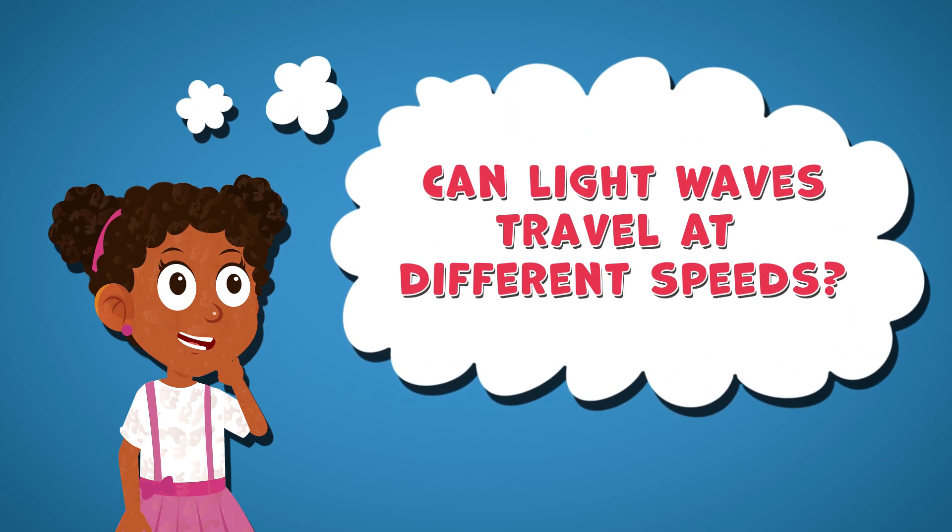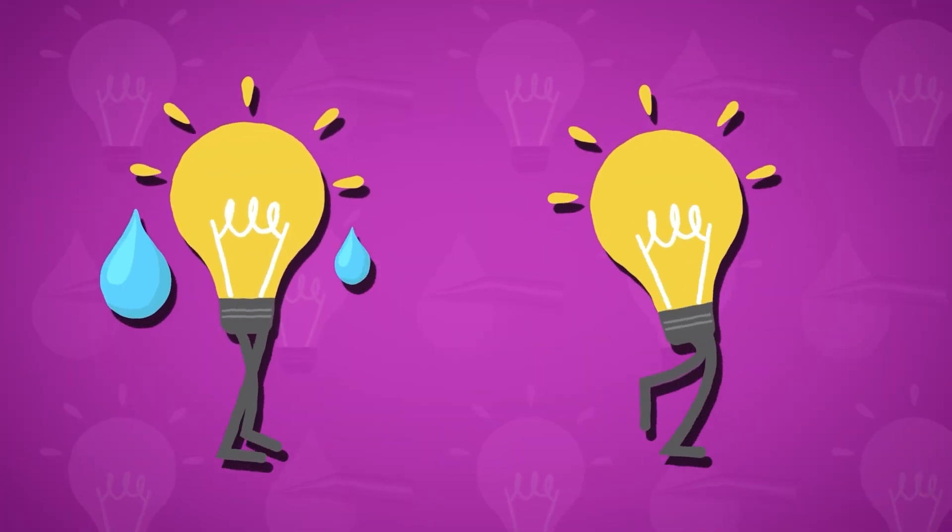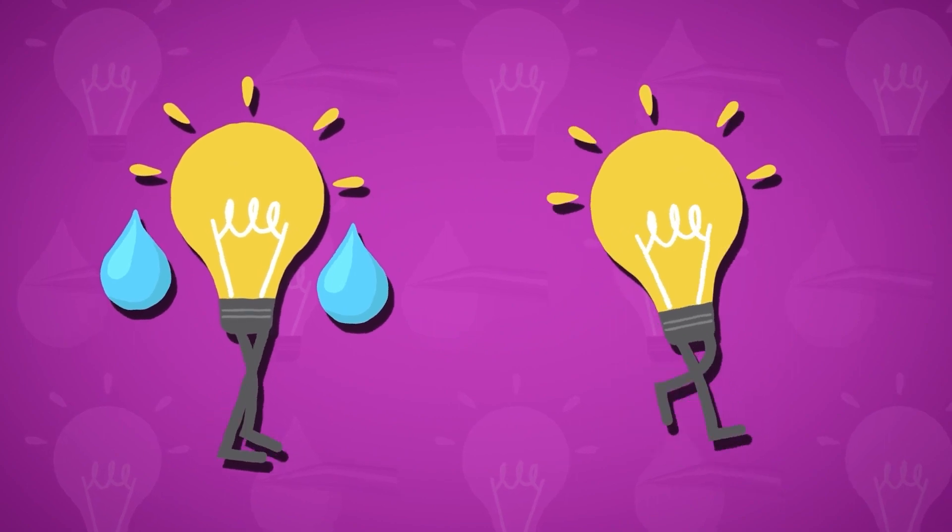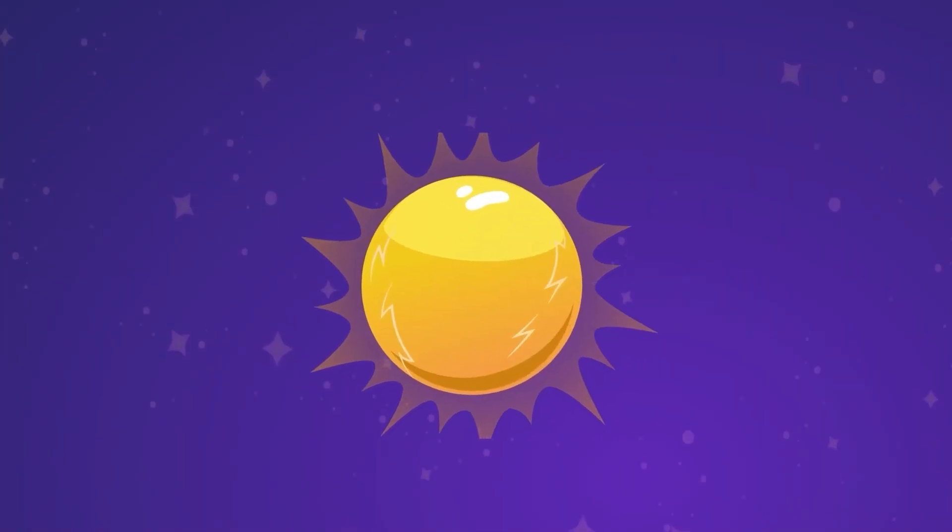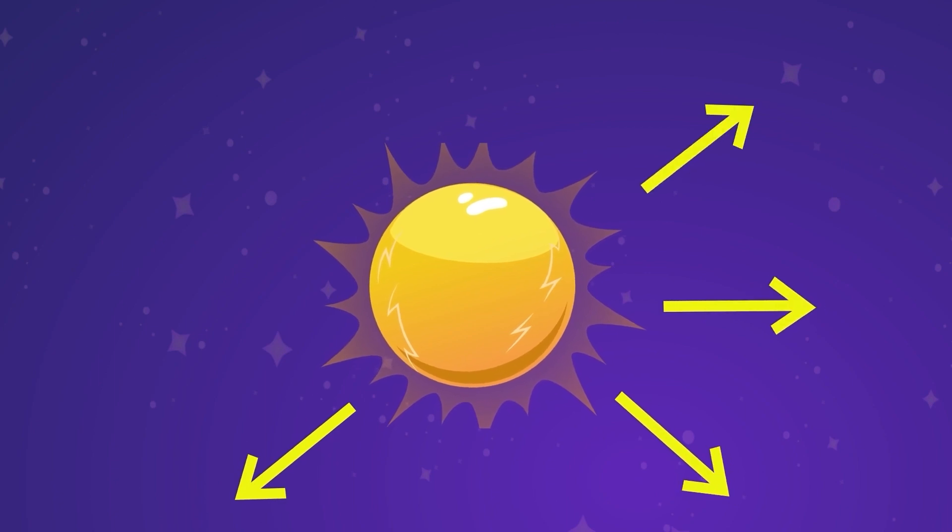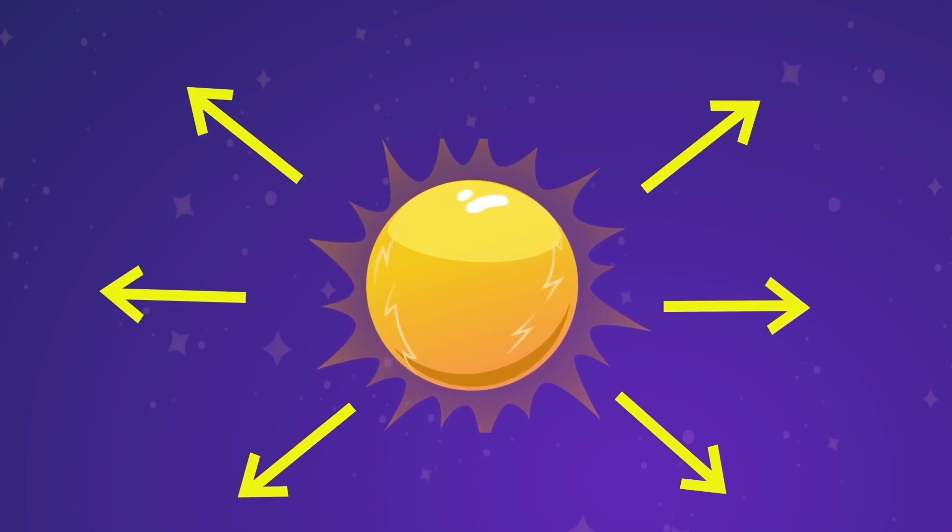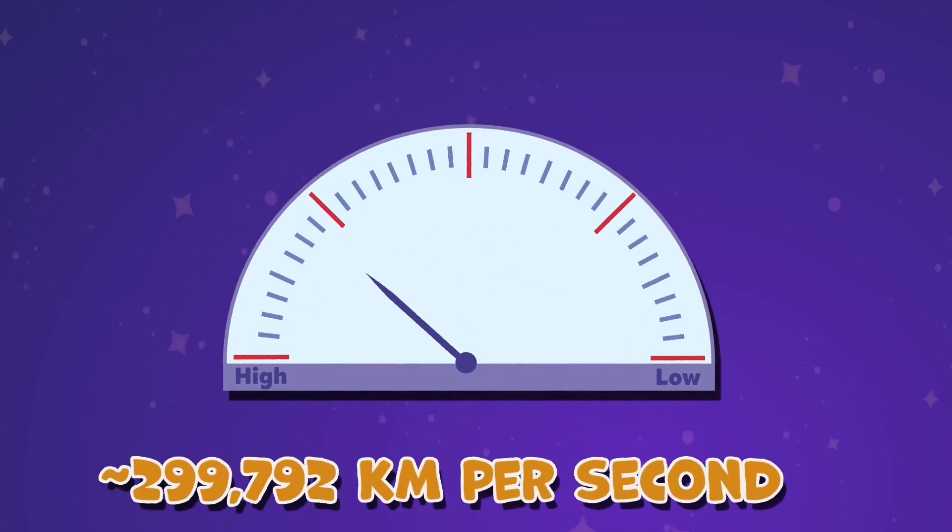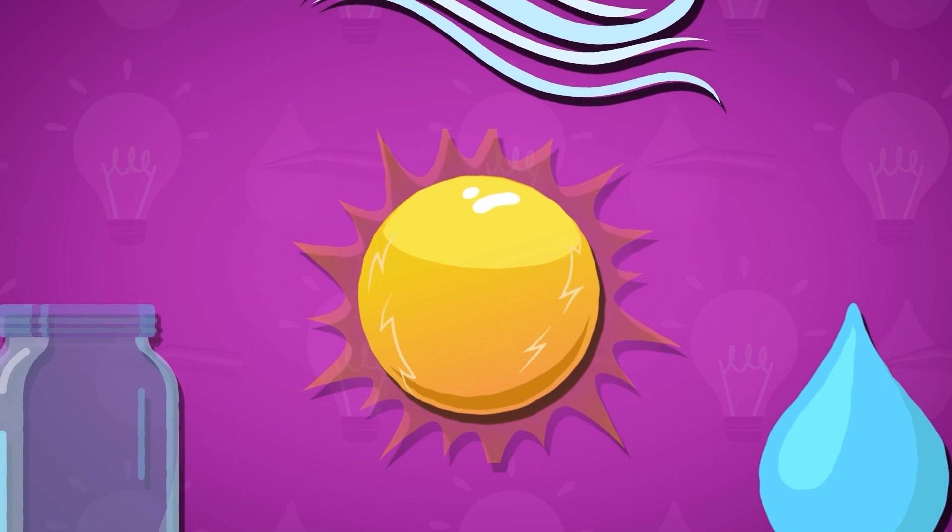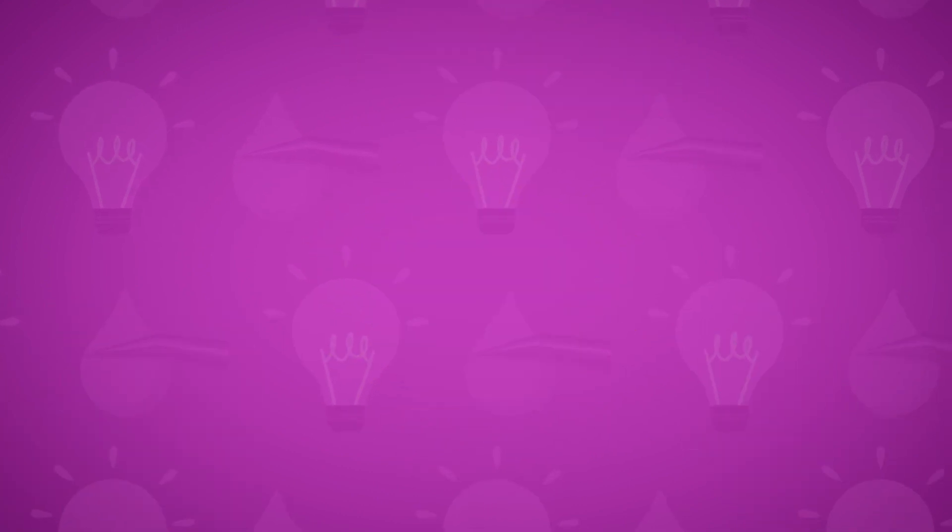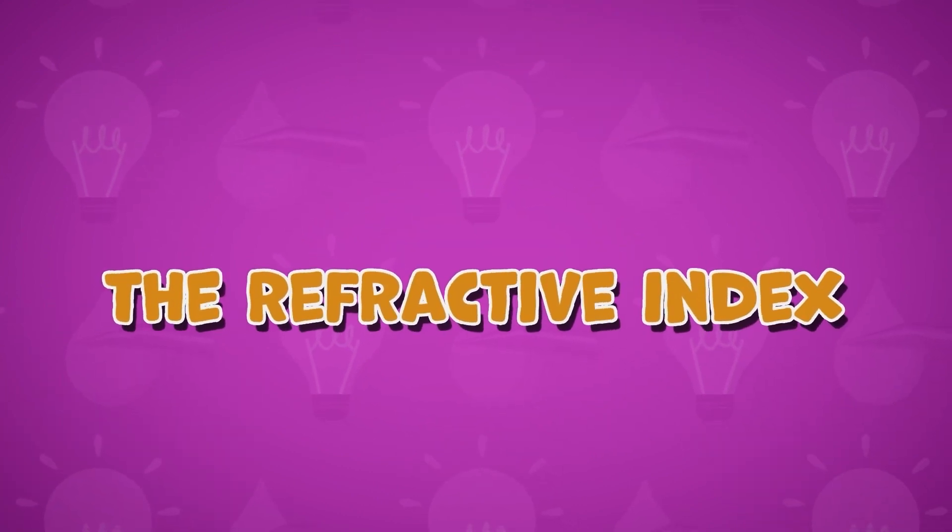Light doesn't travel at the same speed in all materials. In a vacuum where there's no air or matter, light travels at its maximum speed, approximately 299,792 kilometers per second. However, when light enters other materials like air, water, or glass, it slows down.